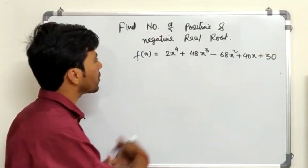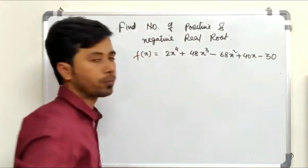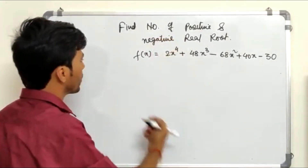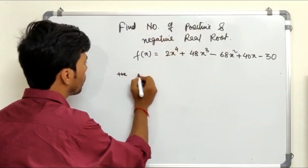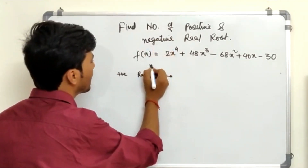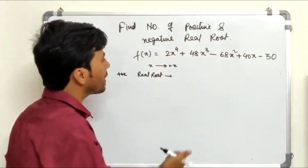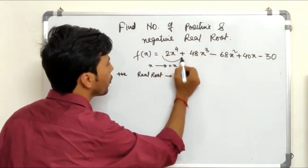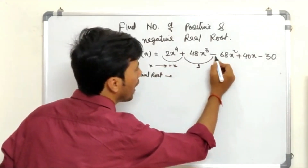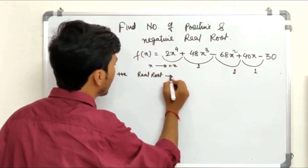For positive real roots, we look at the sign changes when x is positive. Positive to positive: no sign change. Positive to negative: one sign change. Then another sign change, and again one more sign change. So I have 3 positive real roots based on the number of sign changes observed.